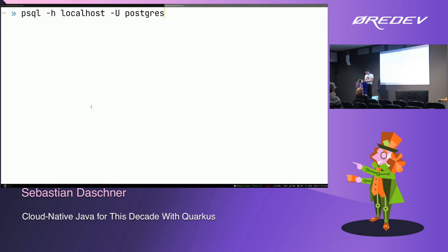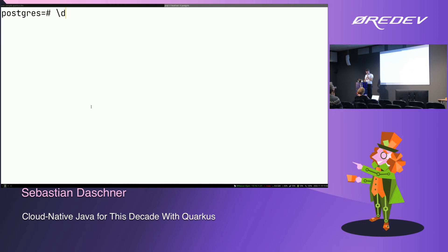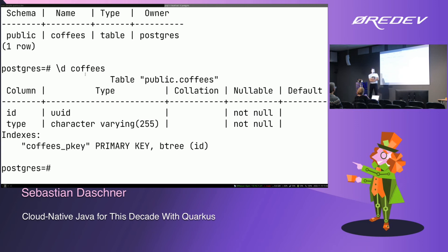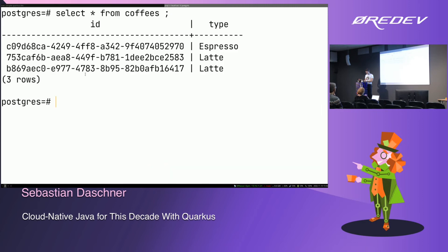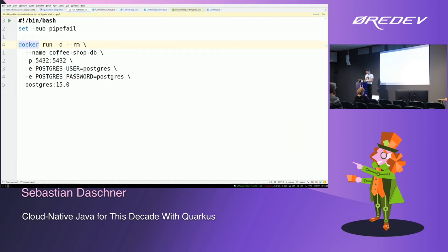Now I connect to Postgres directly — using psql — and run \d to describe the tables. It describes the coffees table with UUID and type columns. Running SELECT * FROM coffees — it's there. My application created these things, and if I restart, the data persists. That's quite nice from a developer experience perspective.